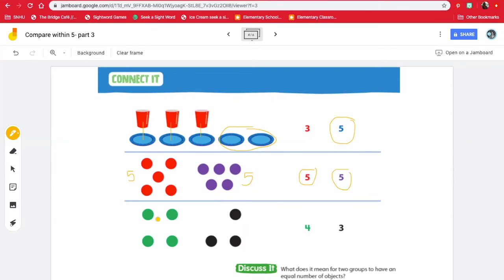Show five. Now let's work on this one. I see one, two, three, four green, and one, two, three black. There are more green dots than there are black dots.